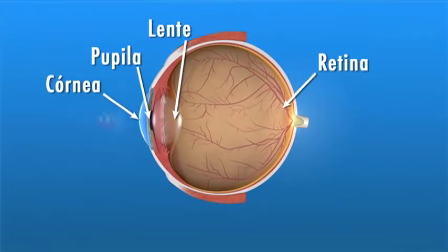To understand how we see clearly, we need to understand how the eye works. The rays of light enter through the cornea, the pupil and the lenses. These rays focus directly on the retina.